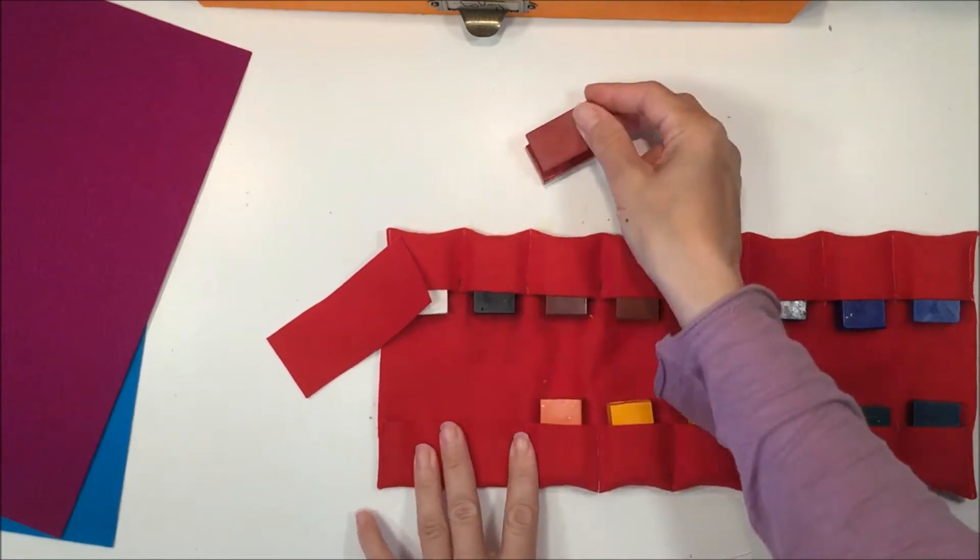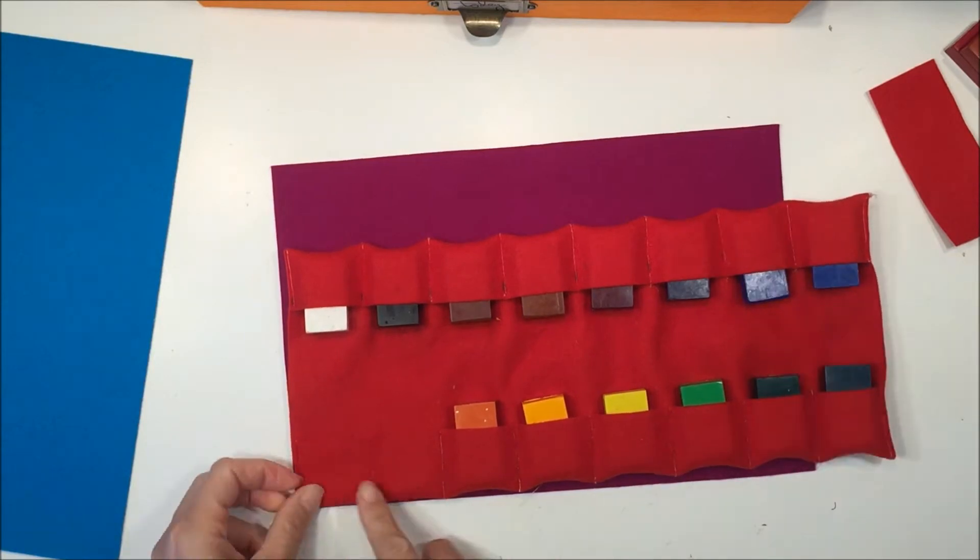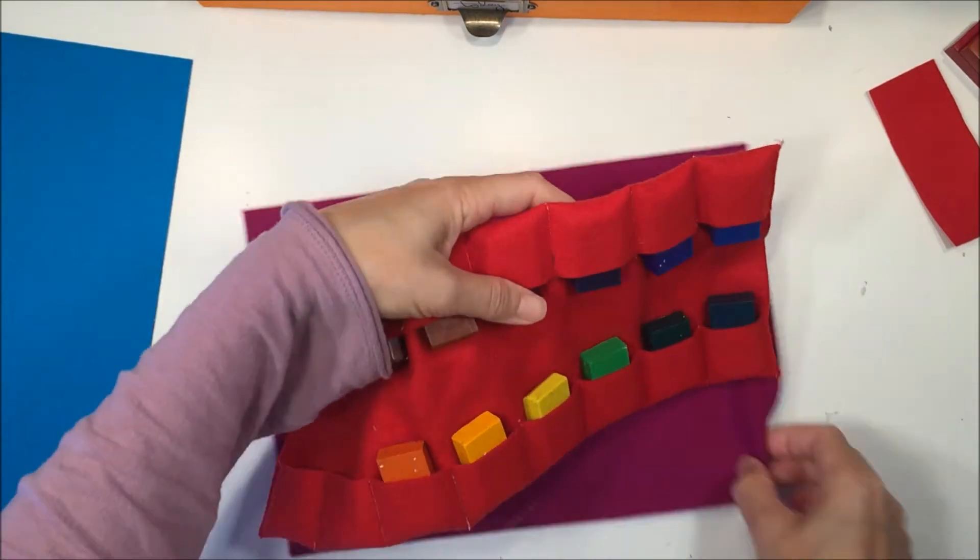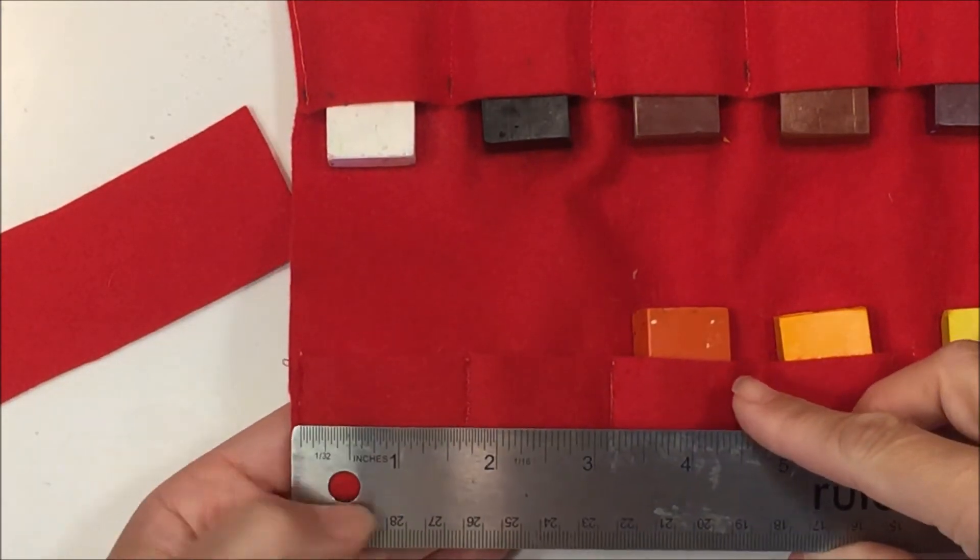This time I'm making a crayon holder that only fits six block crayons. Each of the pockets is going to be color-coded with a different color felt to match the crayon that goes inside.